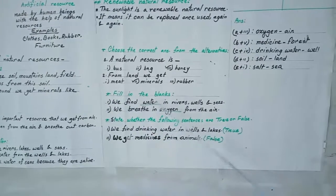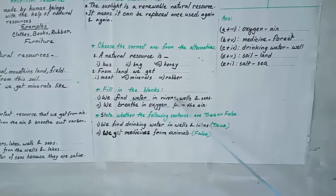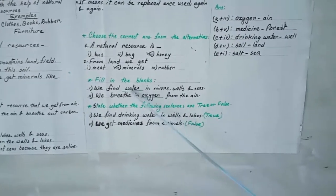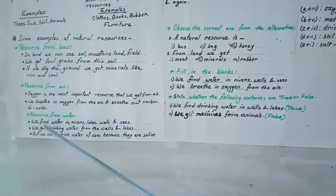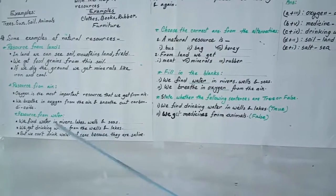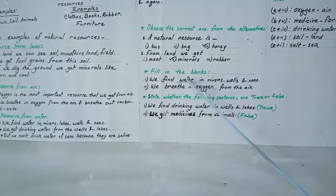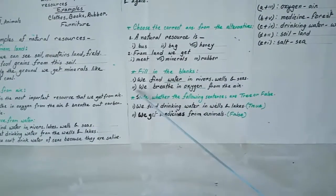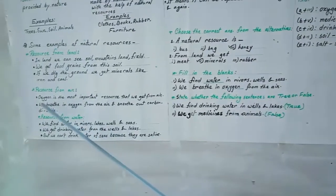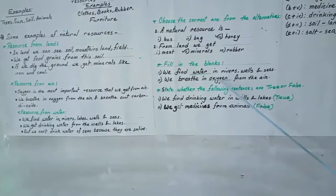The next topic is fill in the blanks. We find dash in rivers, wells and seas. We find water in rivers, lakes and wells. So the appropriate word here is water. Fill in the blanks with water. Next: we breathe in dash from the air. Which thing do we breathe in? We breathe in oxygen from the air. So the appropriate answer is oxygen.